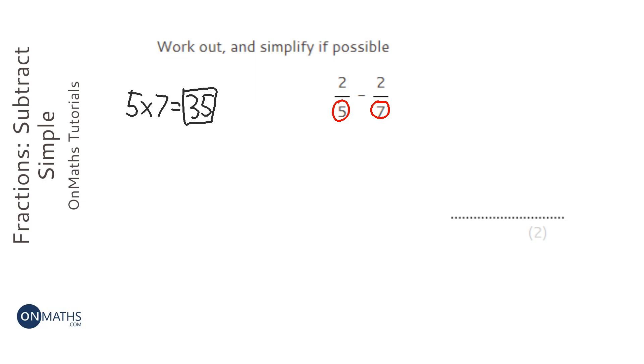So what I'm going to do is I'm going to times the first fraction, top and bottom, by 7. And I'm going to times the second fraction, top and bottom, by 5.